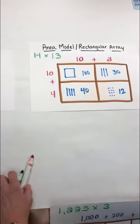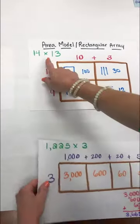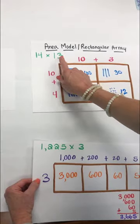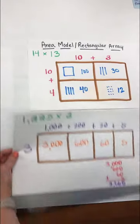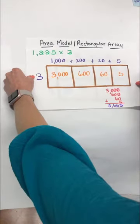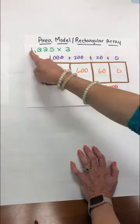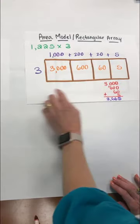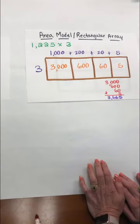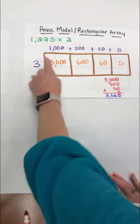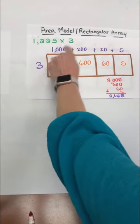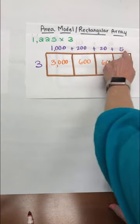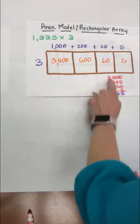Now I want to point out one more thing before we move on. I mentioned that with this problem 14 times 13 we created a 2 by 2. But remember fourth graders can also multiply a four digit number by one digit number. So we wouldn't call this a 2 by 2. Now we have a 4 by 1 showing our 3 down here and our 1000 plus 200 plus 20 plus 5 gives us our 4 by 1.